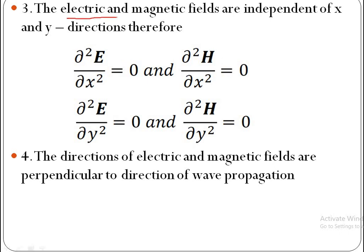Third property: electric and magnetic fields are independent of x and y directions. That means the differentiation of electric and magnetic fields with respect to the x and y axes are zero. That is, ∂²E/∂x² = 0, similarly ∂²H/∂x² = 0, and ∂²E/∂y² = 0. This is the third property.